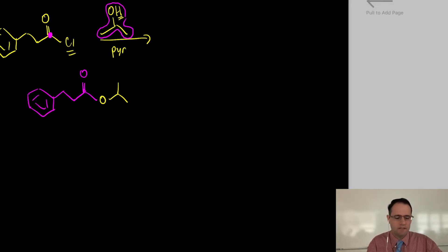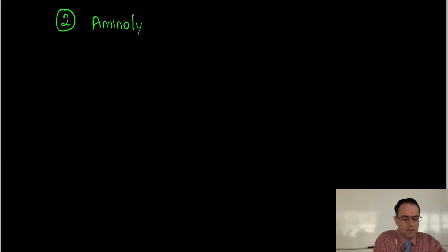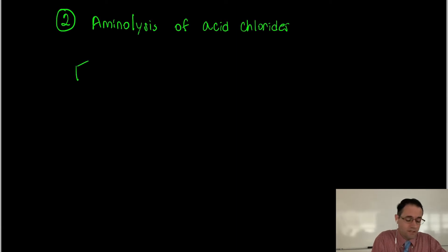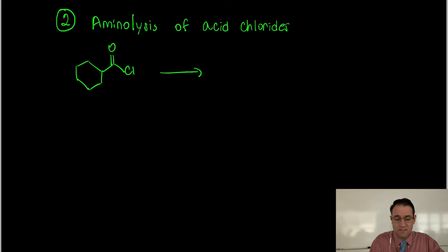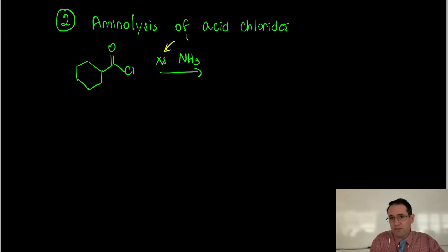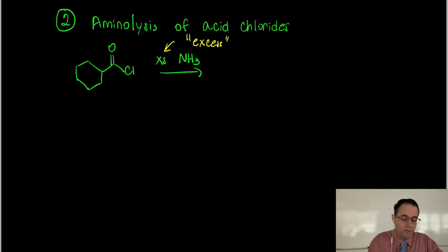The next thing I want to talk about is formation of amides - aminolysis of acid chlorides. If you take an acid chloride and add excess ammonia - XS stands for excess, meaning more than two equivalents - what you'll form is an amide.